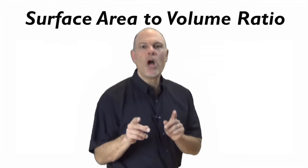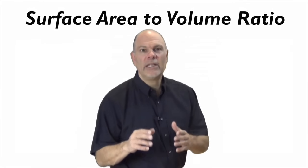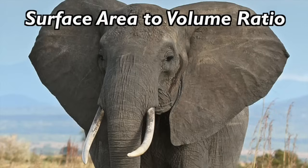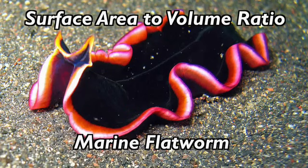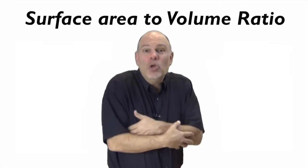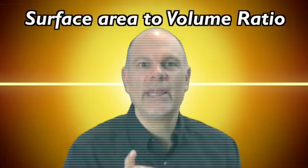In this video, we're going to use one concept, surface area to volume ratio, to explain why cells are small, why whales are big, why elephants have big ears, why flatworms have no special system for moving oxygen into their cells, and why when you get cold, you hold your arms against your body. One concept to explain them all.